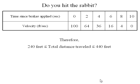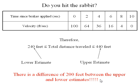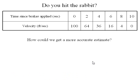So we know that our total distance traveled is somewhere between 240 feet and 440 feet. We have a lower estimate and we have an upper estimate. The problem is the difference between those estimates is 200 feet. So we need to think about how we can get a better estimate.